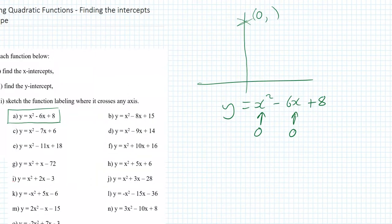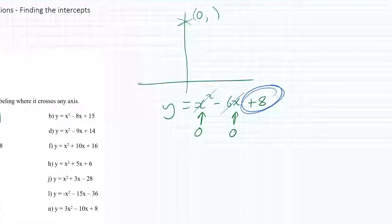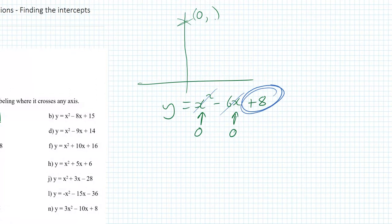Well, clearly, those two parts there will disappear because they're both worth zero. My answer is 8. My y-intercept is going to be 0, 8.